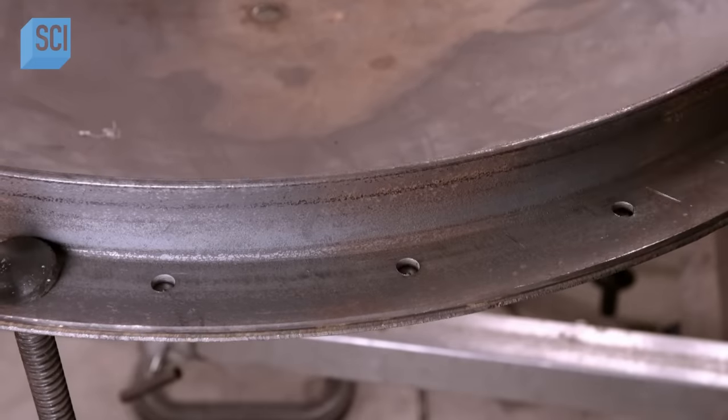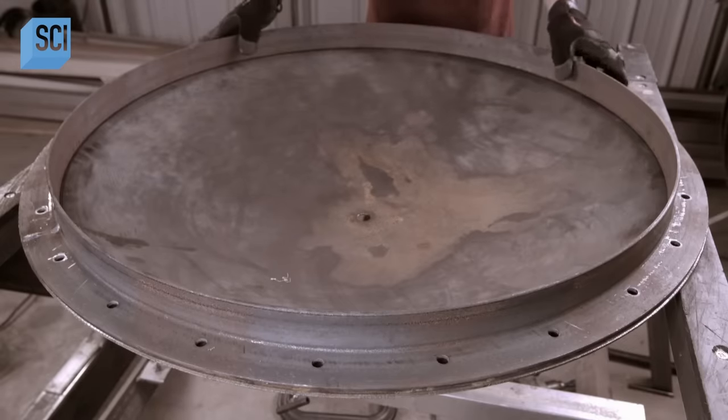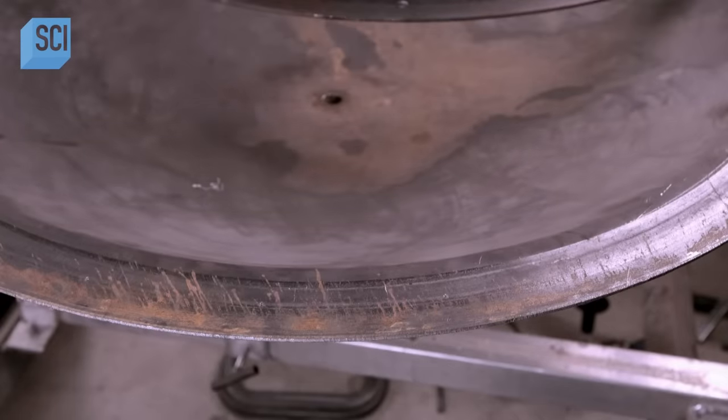They use a ring template to make corresponding holes in the lid, marking the exact center of each hole with a punch tool.